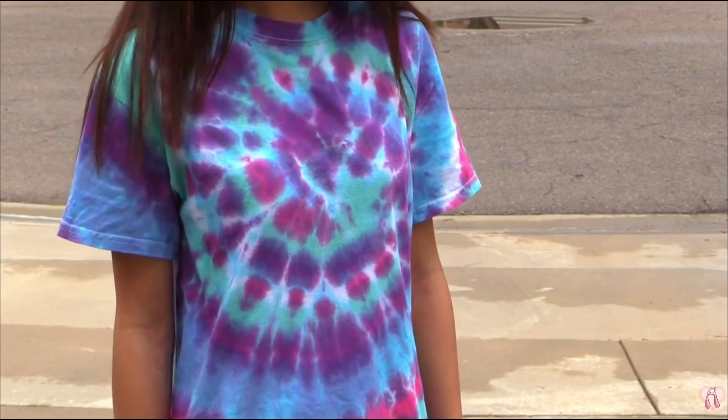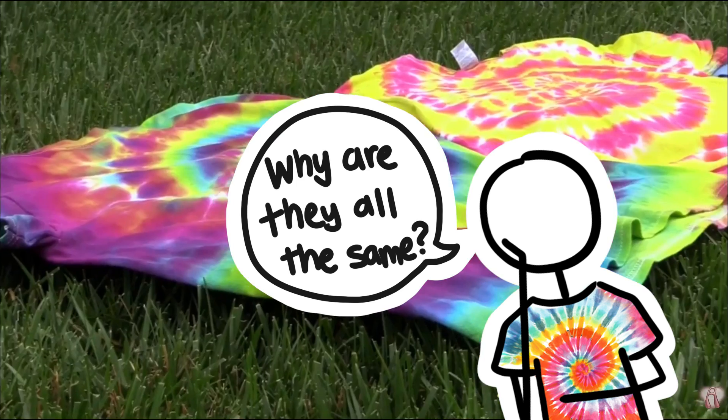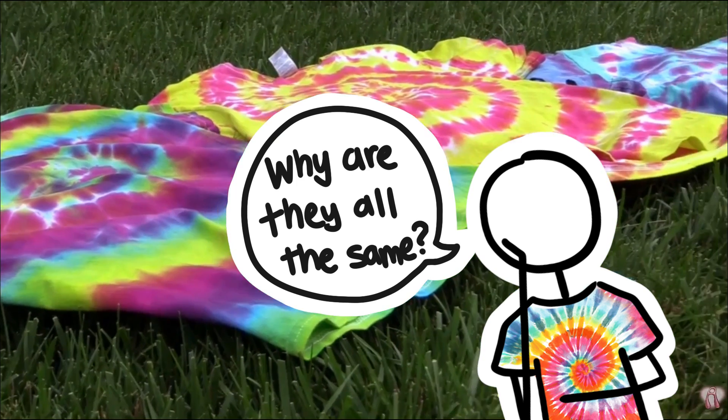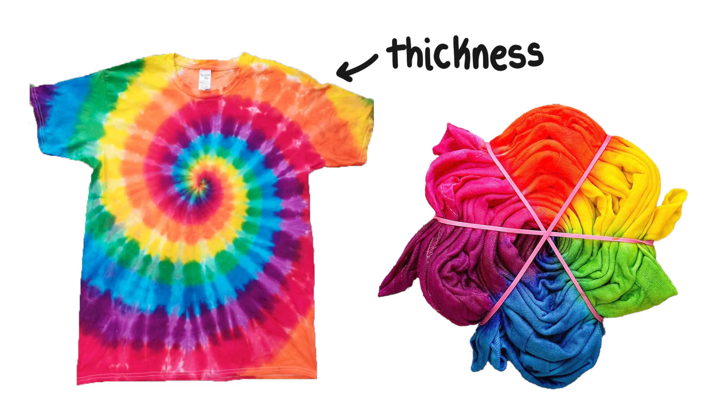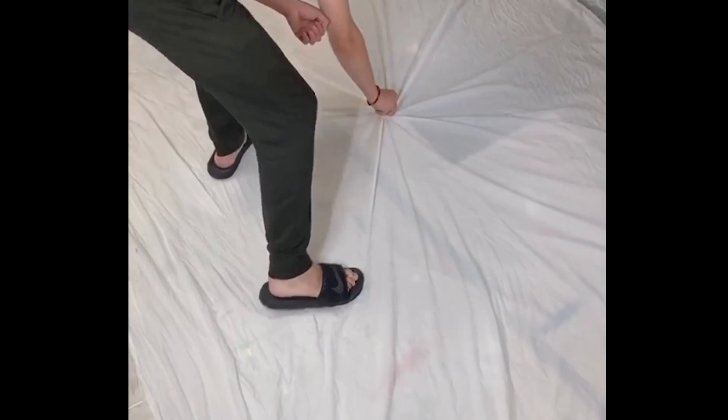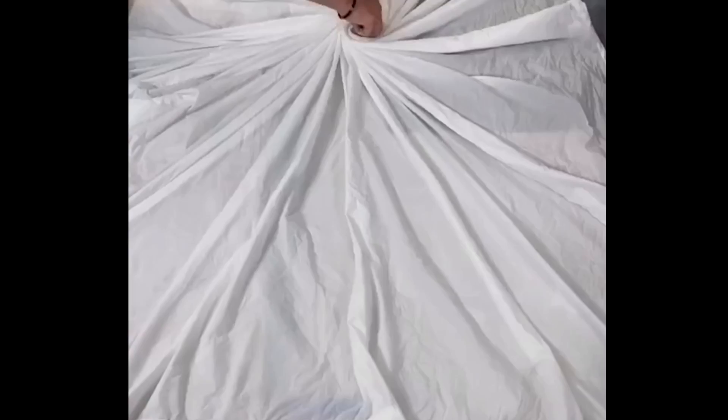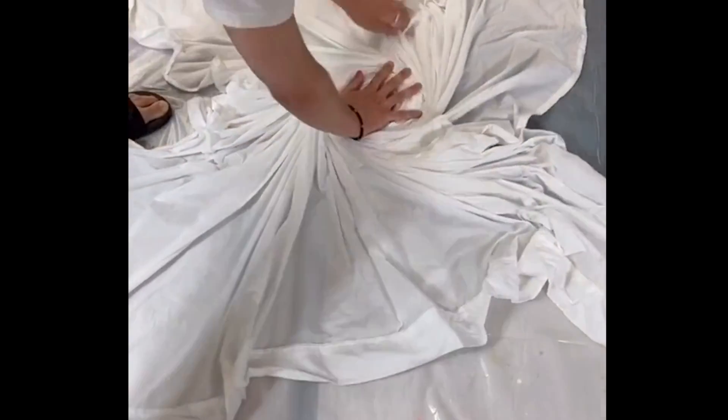Now we can actually answer one of my main questions. Why are all of the spirals on tie-dyed t-shirts the same spiral? It's because shirt materials are similar in thickness and when they're twisted up, the disc ends up being about the same thickness every time. The thickness of the material and the thickness of the disc determines what spiral you end up with. To make a tight spiral that grows slowly, you would need to get a very thin material shirt and twist it up into a thicker disc.